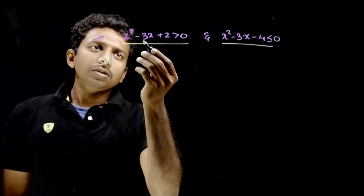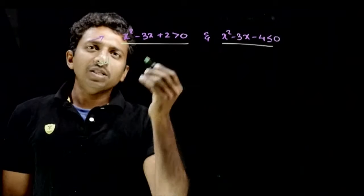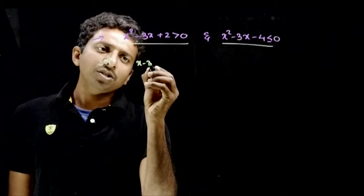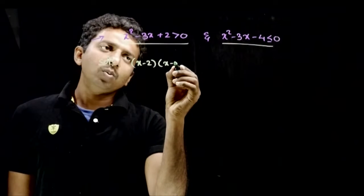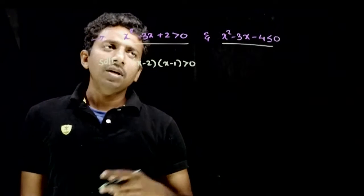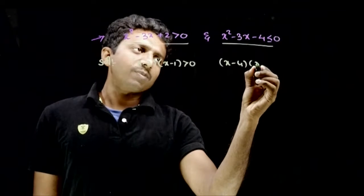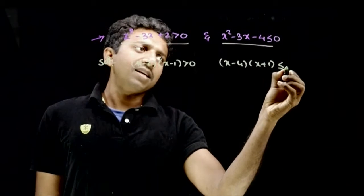These are quadratic inequalities. So x squared minus 3x plus 2, if we factorize it, it will be (x minus 2)(x minus 1) greater than 0. And if we factorize this, you get (x minus 4)(x plus 1) is less than or equal to 0.